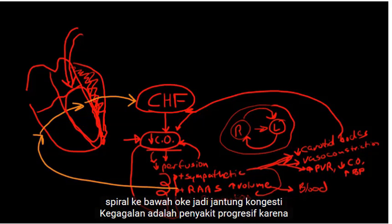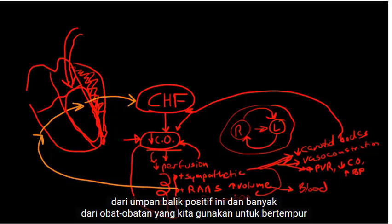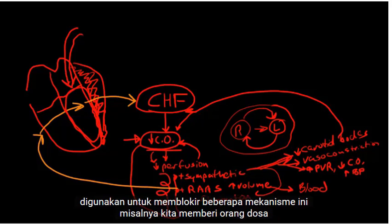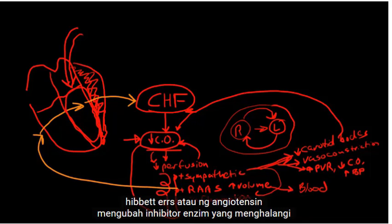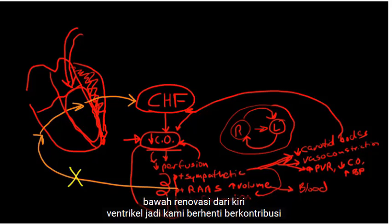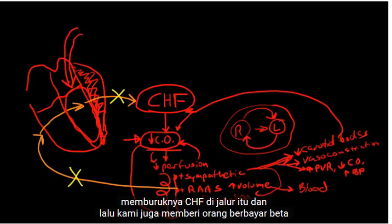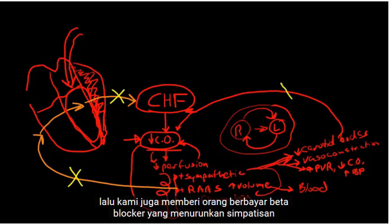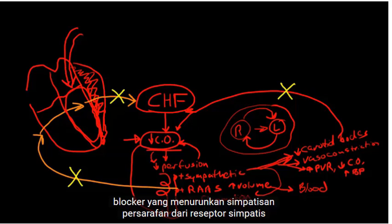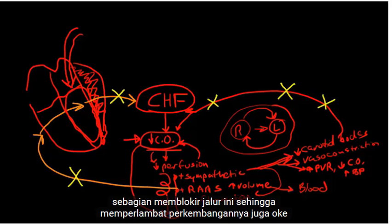Congestive heart failure is a progressive disease because of this positive feedback loop. A lot of the medications we use to combat CHF are actually used to block some of these mechanisms. For instance, we give people ACE inhibitors — angiotensin-converting enzyme inhibitors — that block the production of angiotensin and slow down the remodeling of the left ventricle, stopping that contribution to worsening CHF. We also give people beta blockers that decrease the sympathetic receptors innervating the heart, which partially blocks that pathway and slows down the progression as well.